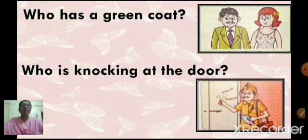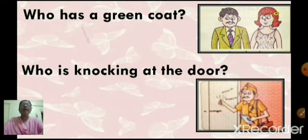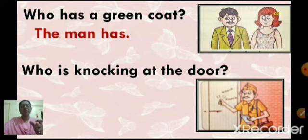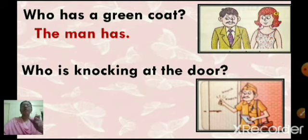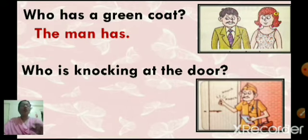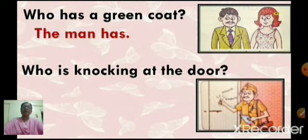The answer is the man. How are you going to answer? You will answer: the man has. You will not say the man has a green coat — in short, you will answer the man has. Now in the question itself the word has has come, so the answer also uses has. Who has a green coat? The man has.